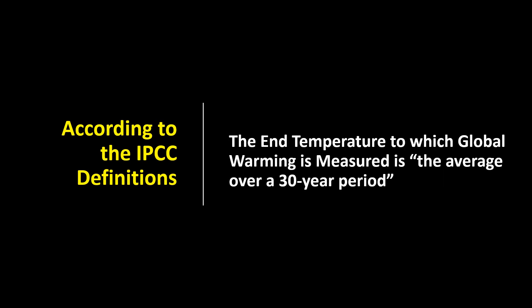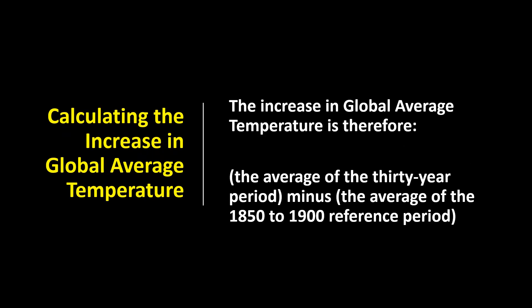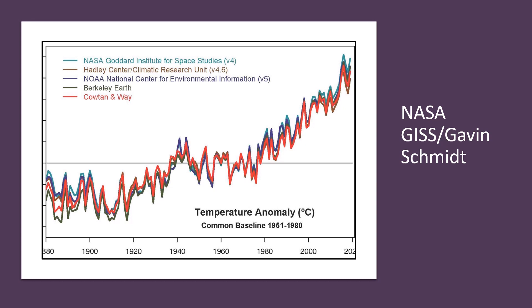The end temperature to which global warming is measured is the average over any selected 30-year period. The increase in global average temperature is therefore the average of the 30-year period minus the average of the 1850 to 1900 reference period. Having established the definitions, we turn to the data.